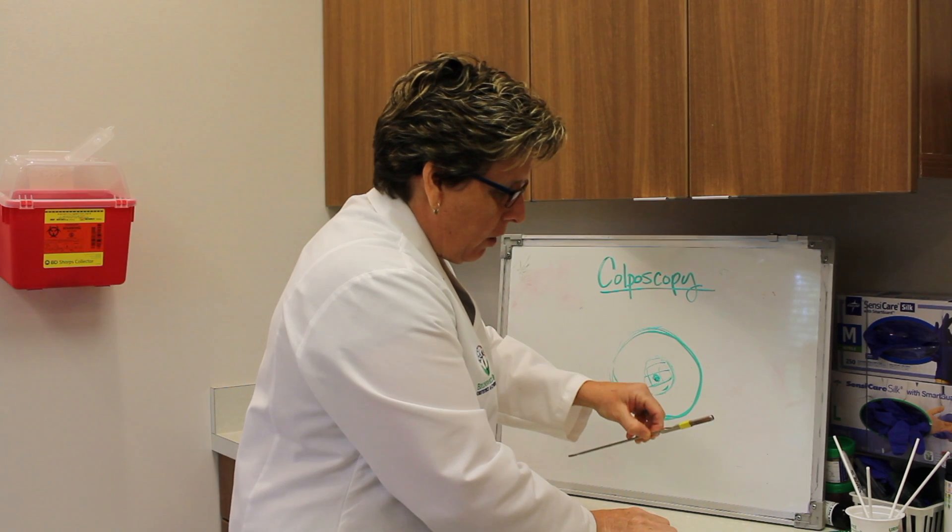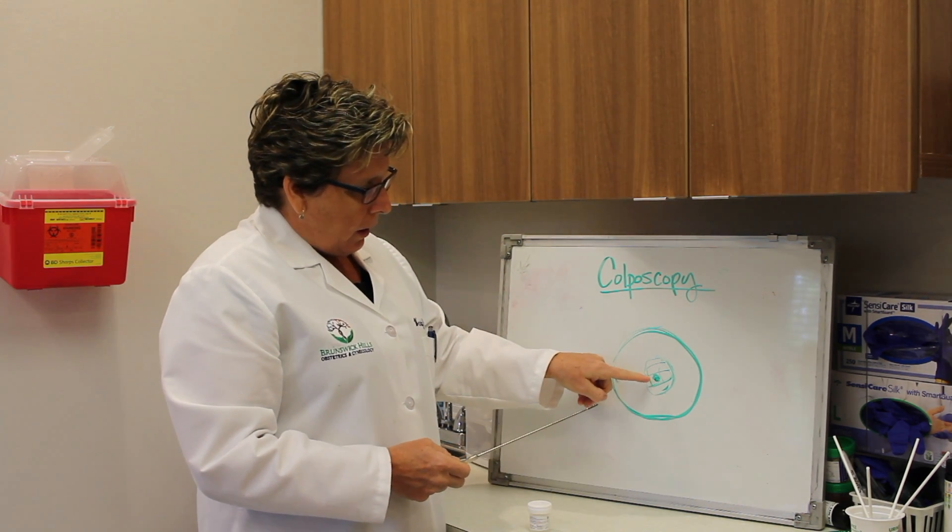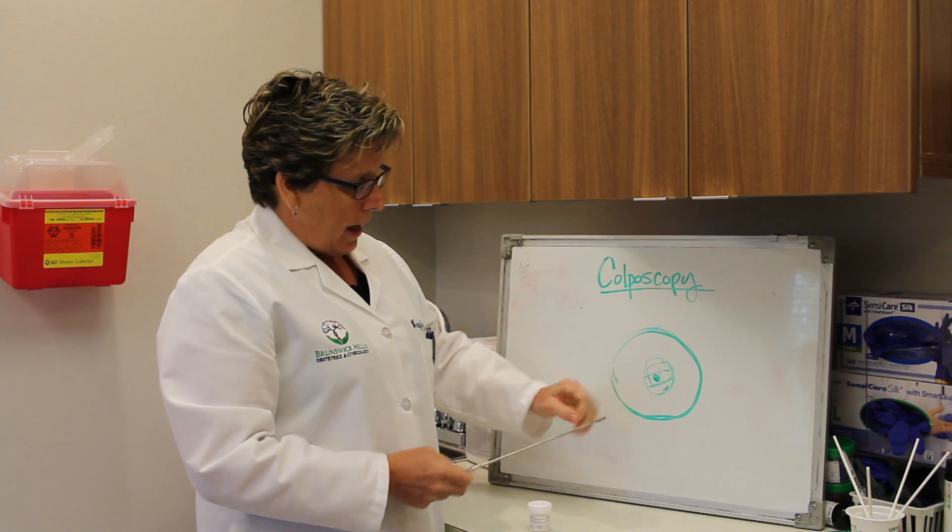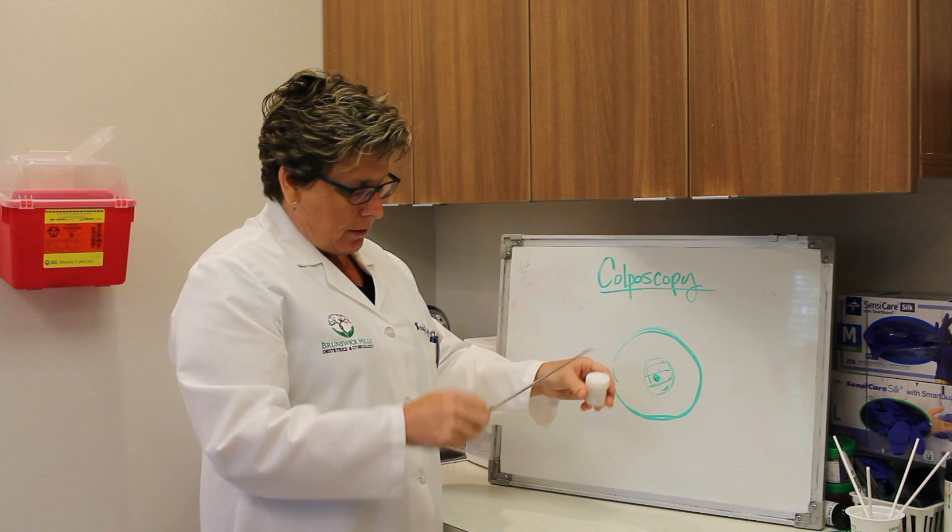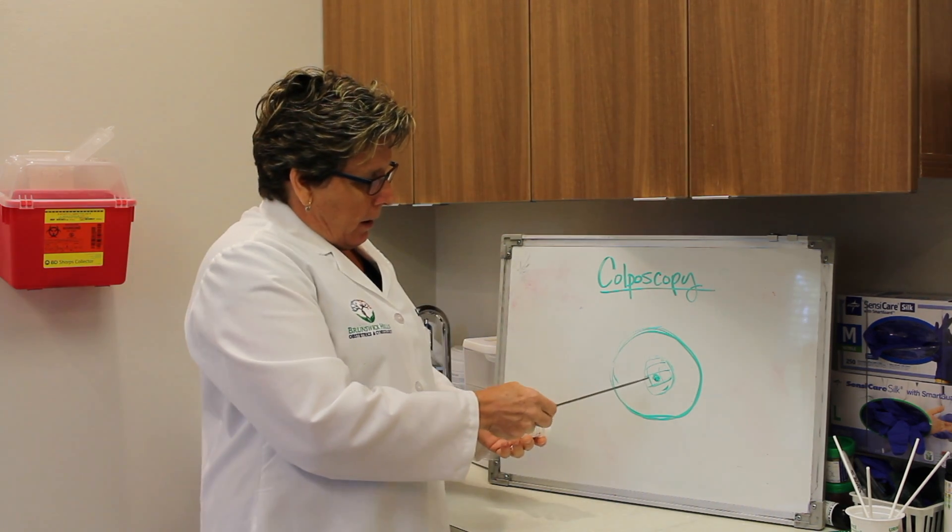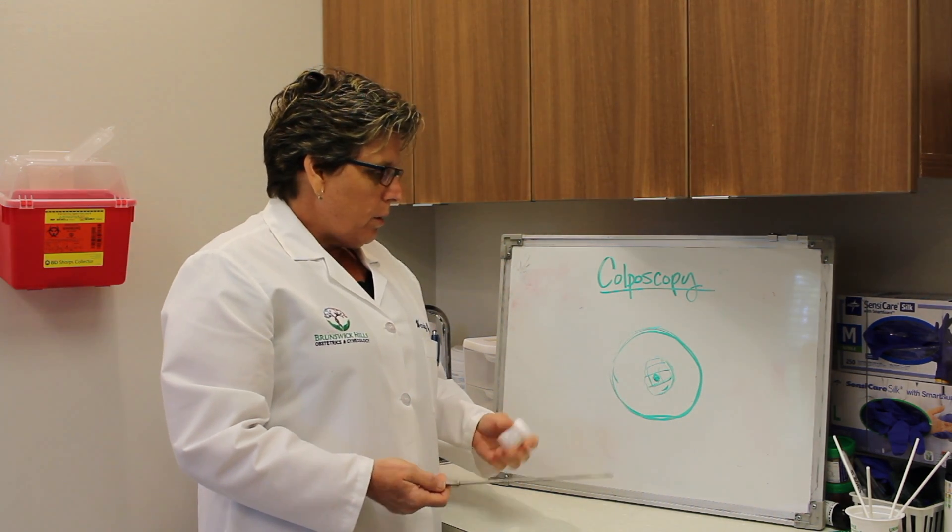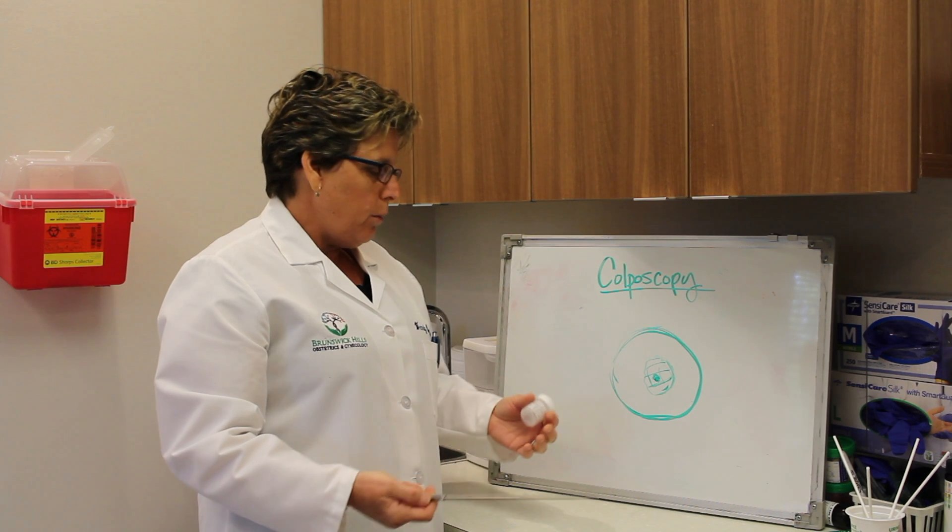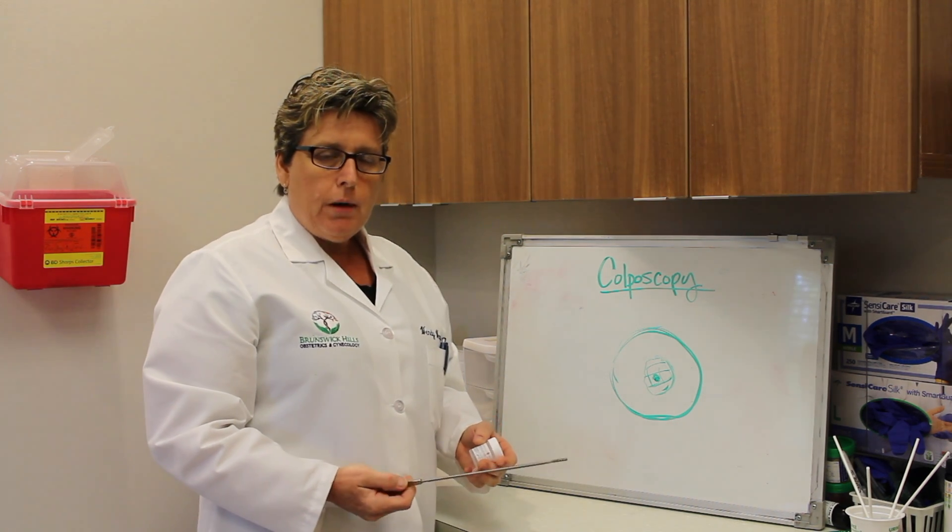The other thing that we do is something called an ECC, or an endocervical curettage. In the os, where we can't see that area, we take some cells from that area. Everything gets put in a jar and sent to pathology. That can be a little crampy when it's done, but again, pretty minimal. If you can be relaxed and kind of know what's going on ahead of time, it's a fairly short procedure, and it's minimally painful.